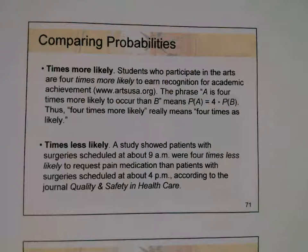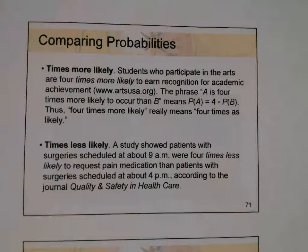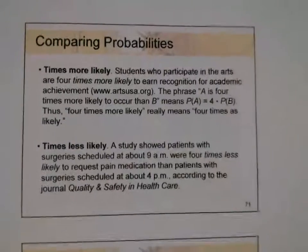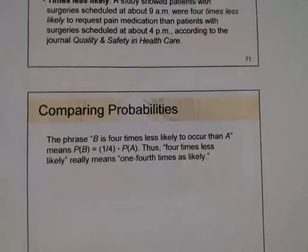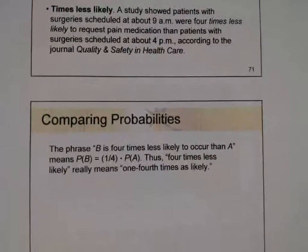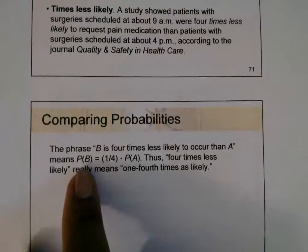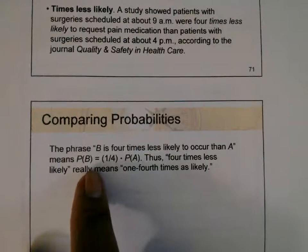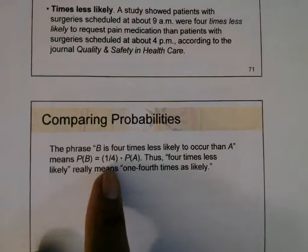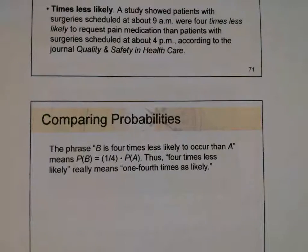And then 'times less likely.' Here's the situation: a study shows patients with surgery scheduled at about 9 a.m. were four times less likely to request pain medication than patients with surgery scheduled at about 4 p.m., according to the journal Quality and Safety in Health Care. The phrase 'B is four times less likely to occur than A' really means the probability of event B equals one-fourth the probability of event A — so four times less likely really means one-fourth as likely.